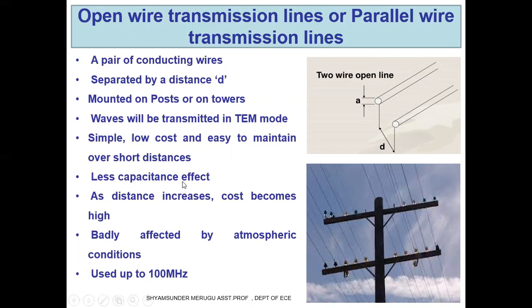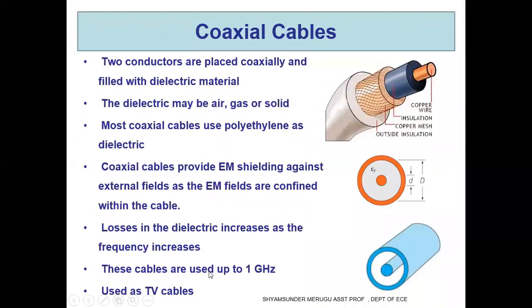These lines are openly connected from one tower to another, so they are badly affected by atmospheric conditions. They have less capacitance effect. These transmission lines are used up to 100 megahertz.